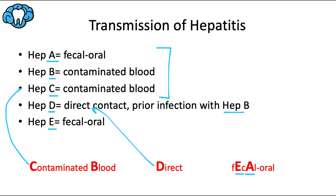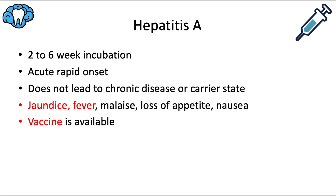Hepatitis A is transmitted by the fecal-oral route — E and A are the vowels in fecal. It has a two to six week incubation period and usually has an acute rapid onset — remember A for acute. It does not lead to chronic disease or a carrier state, so this virus won't cause cirrhosis or long-term liver damage. Short-term acute symptoms include jaundice, yellowing of the skin or whites of the eyes, fever, malaise, loss of appetite, and nausea. A vaccine for hepatitis A is currently available.